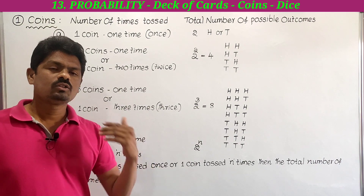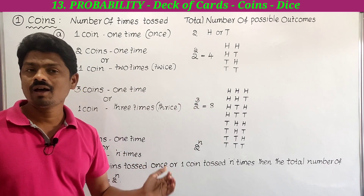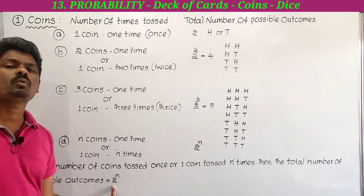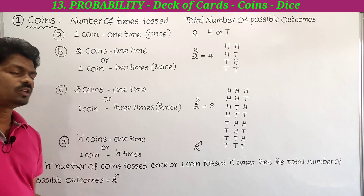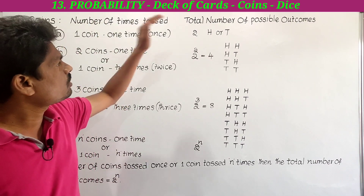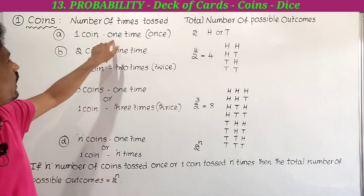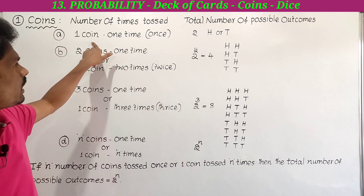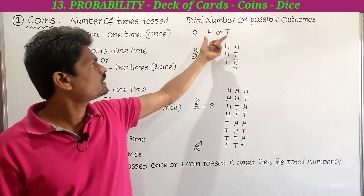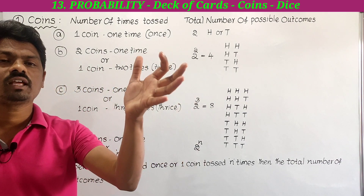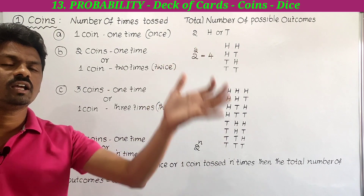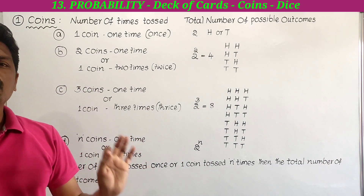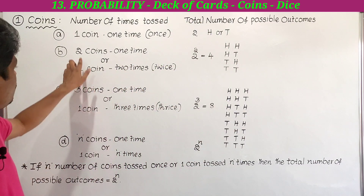This is very important to solve the problems. If one coin is tossed once, n equals 1, so the total number of possible outcomes is 2 to the power 1, which equals 2. The possible outcomes are either head or tail. So if one coin is tossed once, the total number of possible outcomes equals 2.